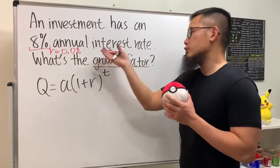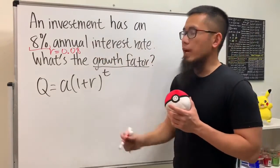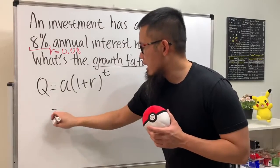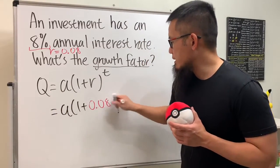And this is positive because you actually make more, right, because of the interest, so it's positive 0.08. And all we have to do is just put this right here, so we get a times (1 + 0.08) and then